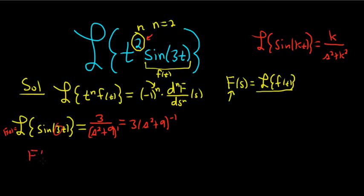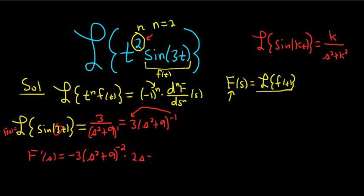Big F prime of s — we can use the power rule and the chain rule. Put the negative in the front, so you get negative 3 times (s squared plus 9) to the negative 2, times the derivative of the inside function, which is 2s. So this equals negative 6s over (s squared plus 9) squared.